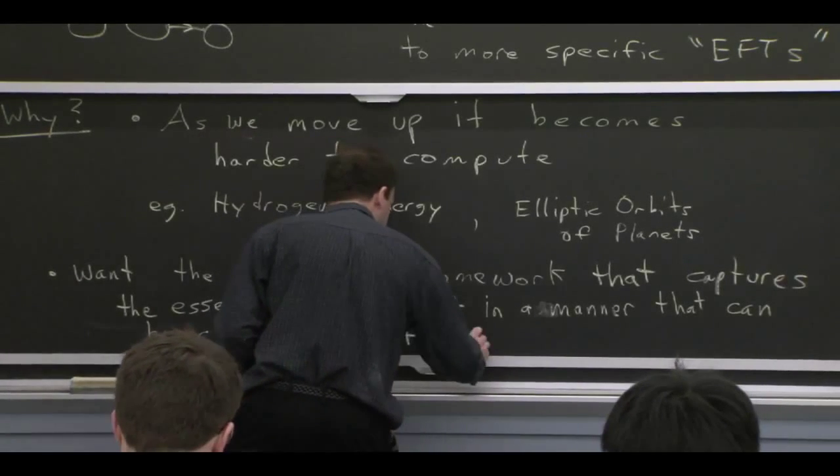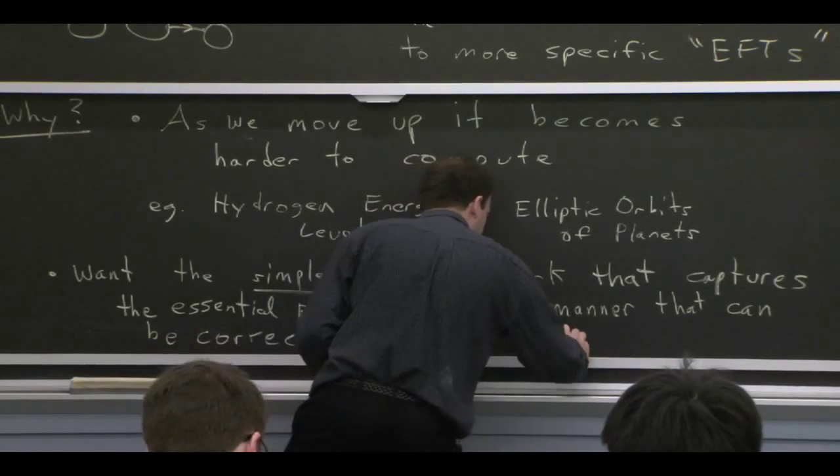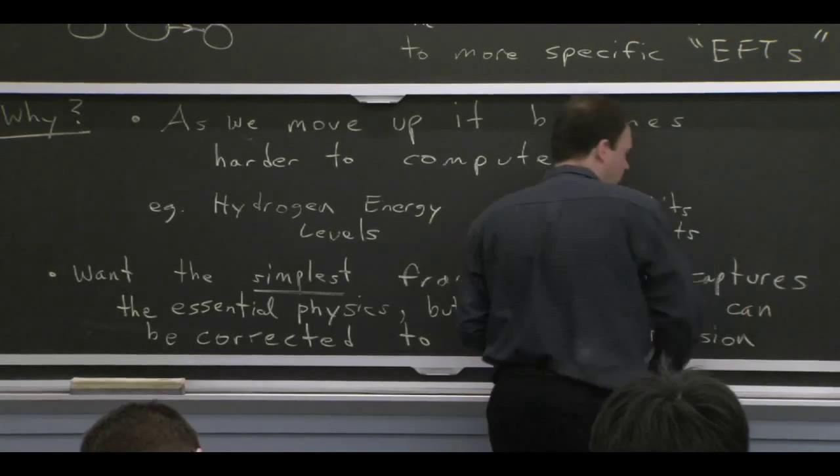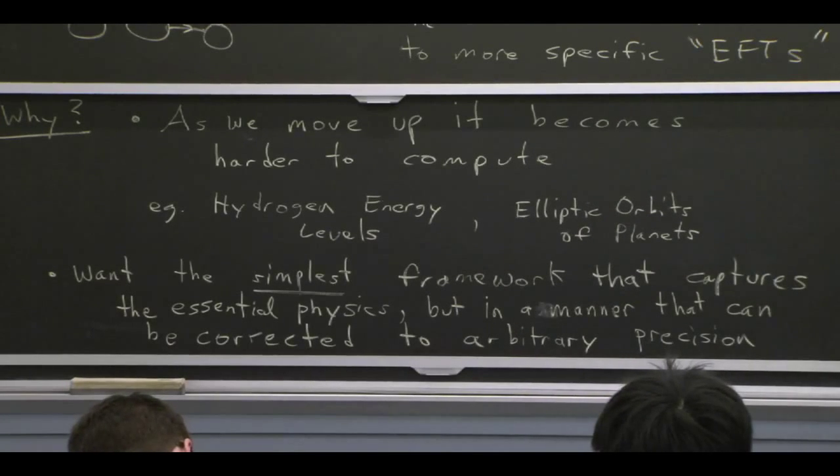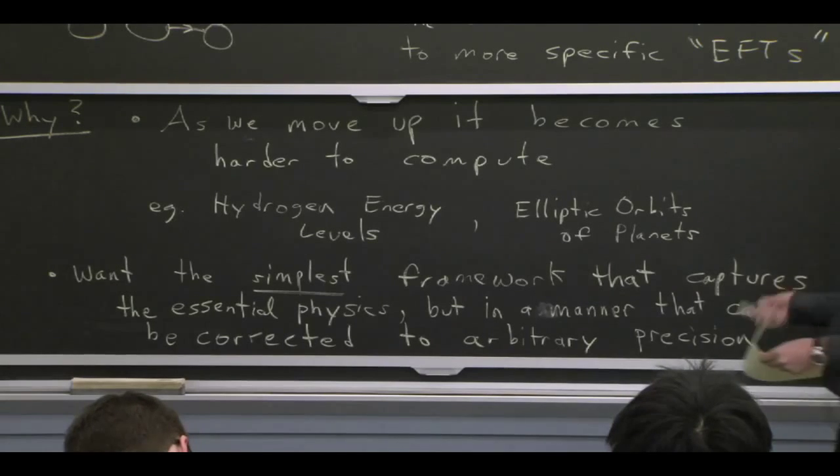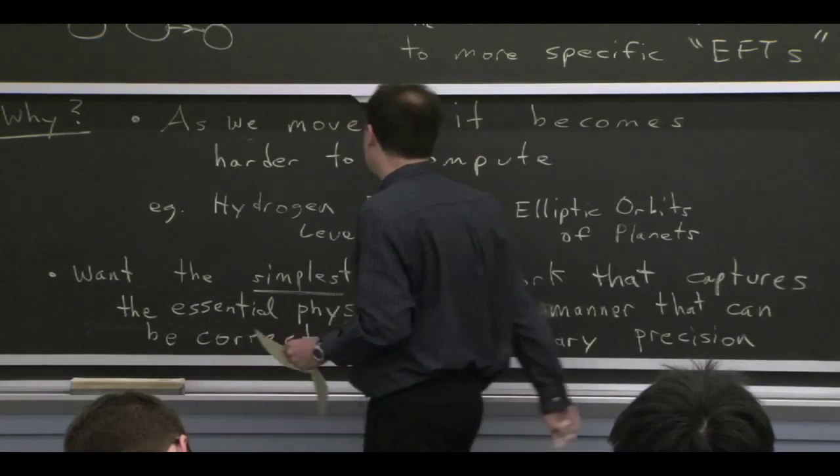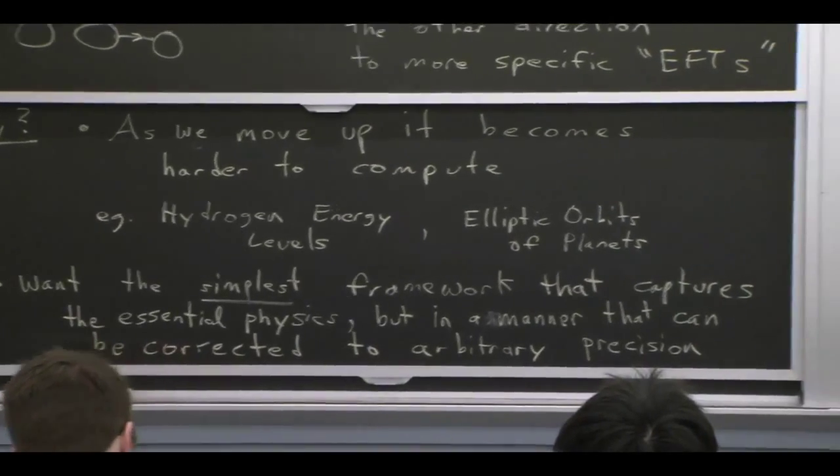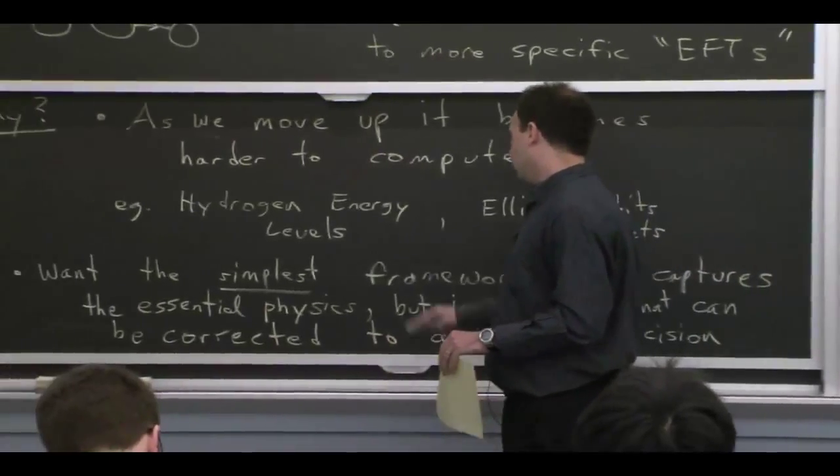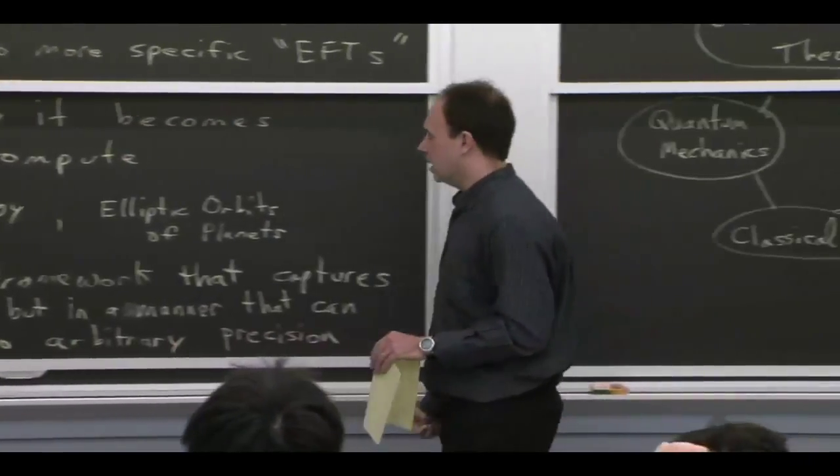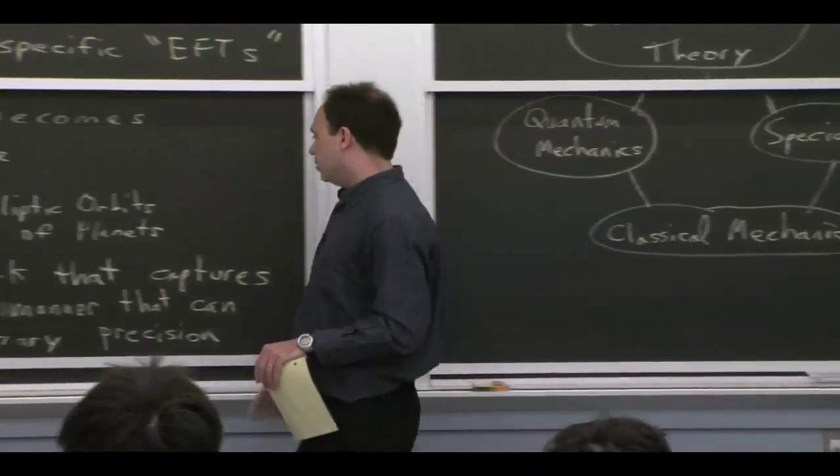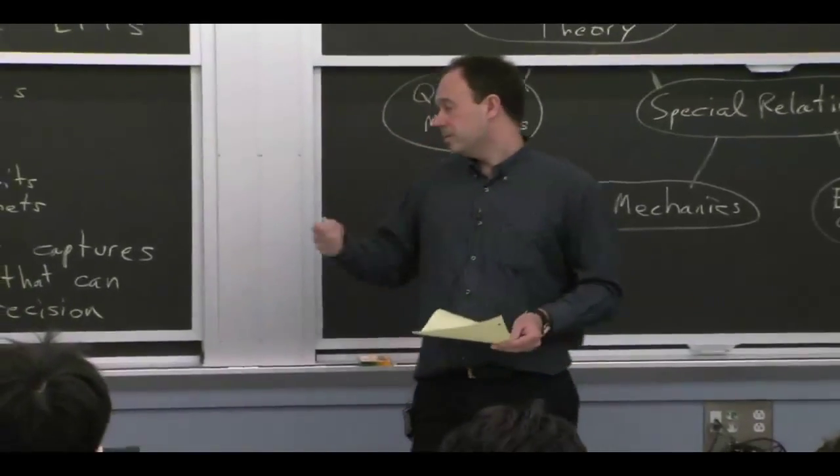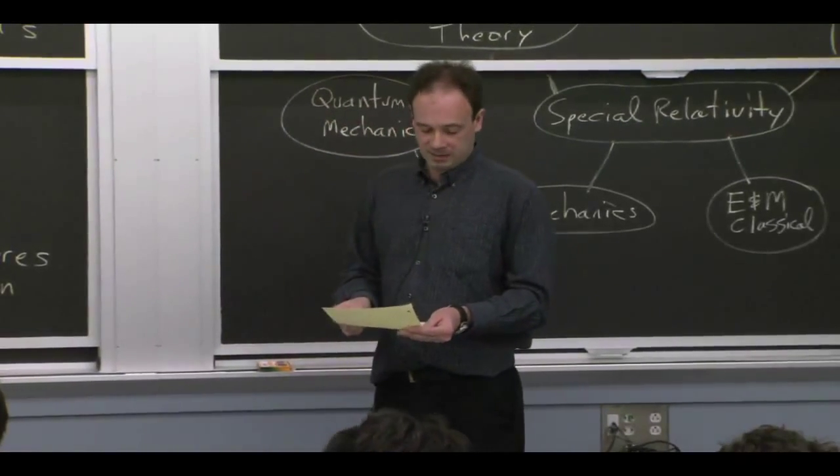So I'll say that we can correct it in principle to arbitrary precision. So if you like, what we're doing is we're taking quantum field theory and we're expanding it. And the lowest order to determine that description is an effective field theory. And that effective field theory may have different fields. It may have different symmetries. And it will certainly have ability to calculate in a different fashion than the original theory. But we will keep higher order terms in that expansion. And therefore, we'll be able to correct it to arbitrary precision just by expanding to higher and higher order.